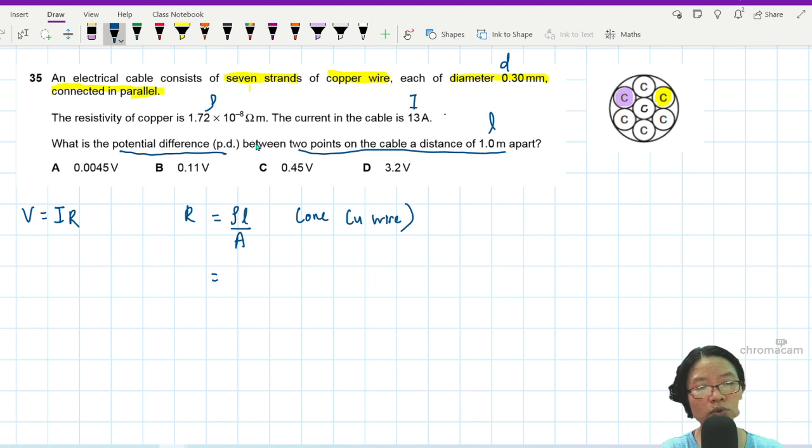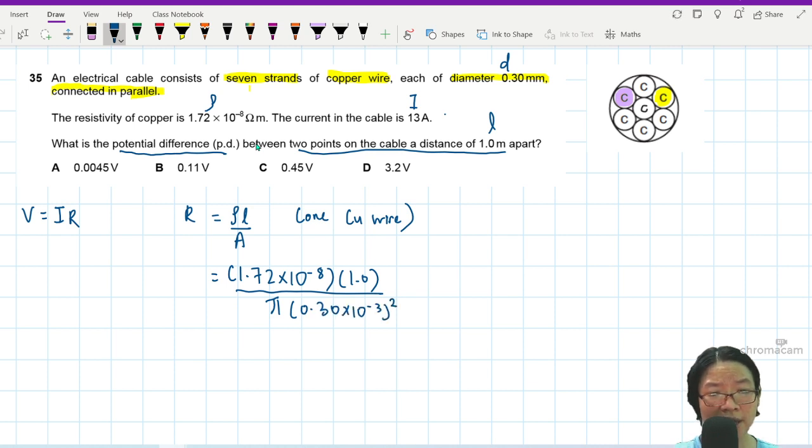I'm going to do this: 1.72 × 10^-8 times the length of the copper wire, which is 1 meter, divided by area, which is πd²/4. So 0.30 × 10^-3 squared divided by 4. If you press your calculator for this one, I believe you will get 0.243 ohms. But this is one copper wire.